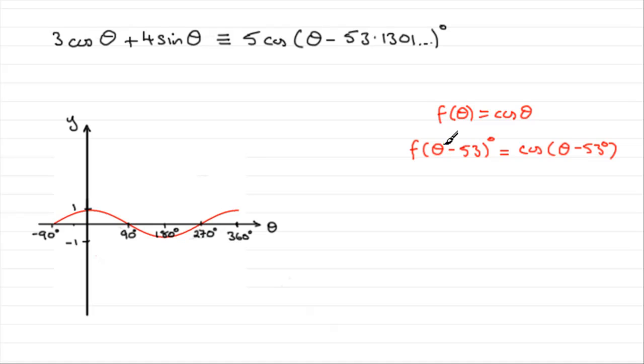And you should know what this does to any graph. What it does is it takes the graph of f(θ) and slides it 53 units to the right. In other words, we take this graph and move it 53 degrees to the right.